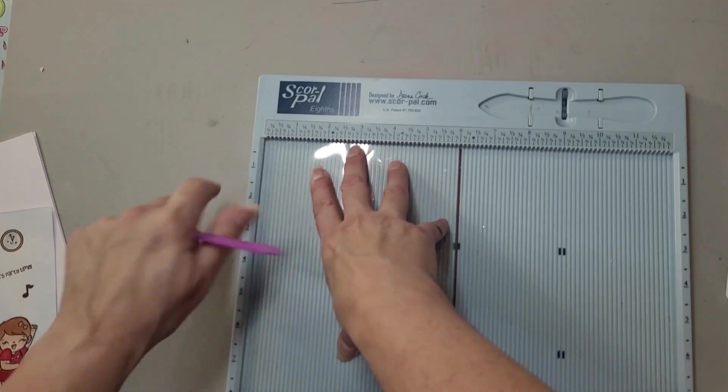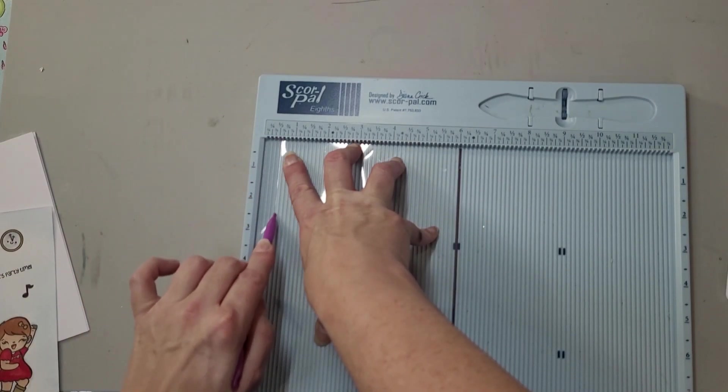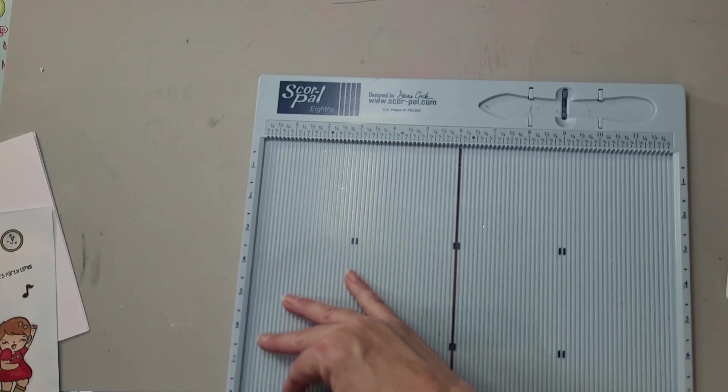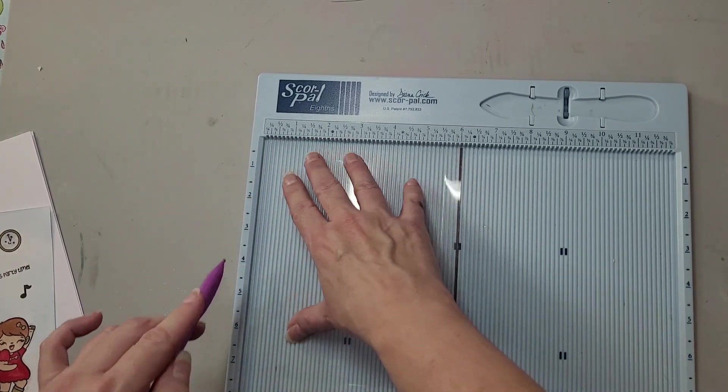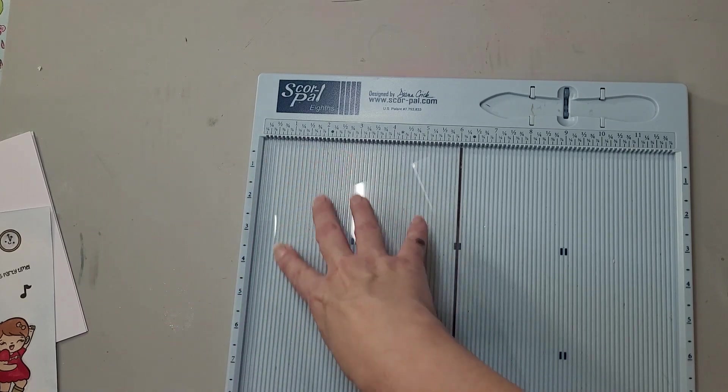Alright, so I know this is going to be hard to see. So I'm going to go a half inch down this way. I'm going to turn it, go a half inch, turn it again. And this is very thin acetate.